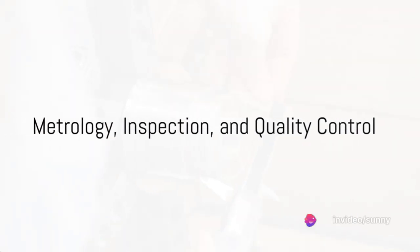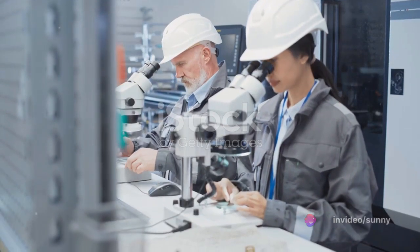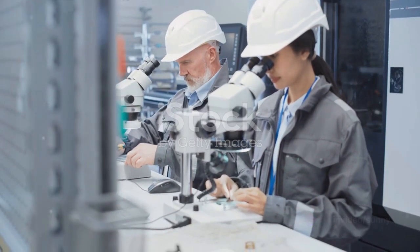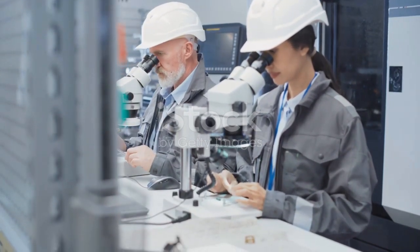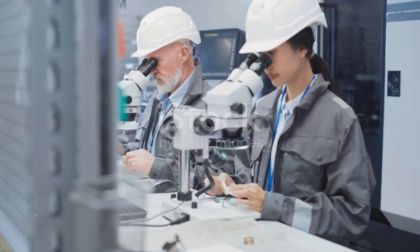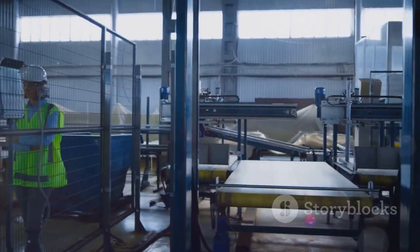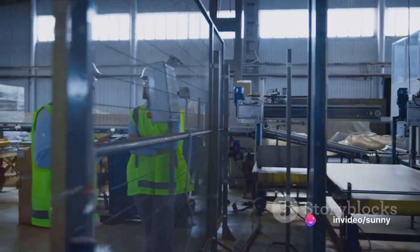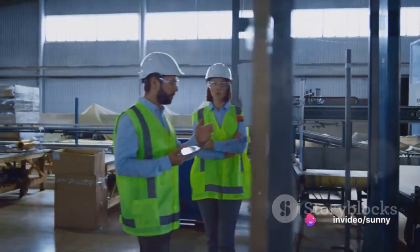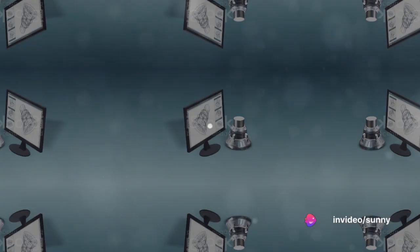Metrology and inspection are the quality control of manufacturing. They involve measuring and testing products to ensure they meet the specified dimensions, shape, and surface finish. Tolerance analysis in manufacturing and assembly is a key aspect of this area, ensuring the final product functions as intended.